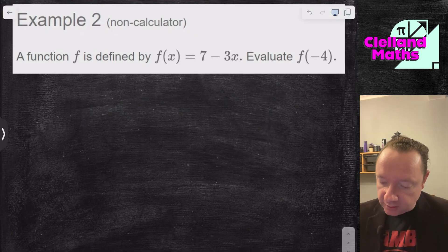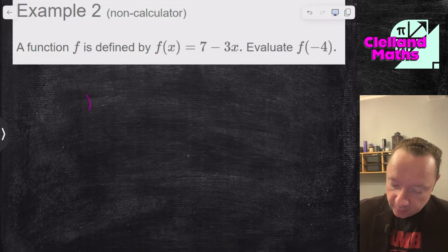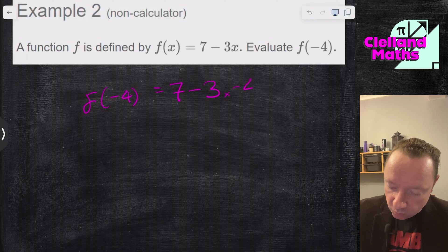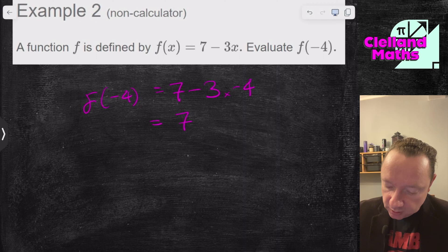Example 2. Function is defined as f of x equals 7 minus 3x. Find f of minus 4. So it's the same idea. I'll write f of minus 4 equals 7 minus 3 times minus 4. Now watch your BIDMAS here. A minus times a minus is a plus. So it's 7 add 12, which is 19.